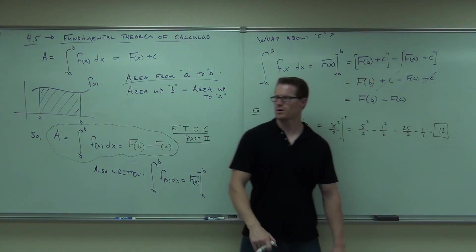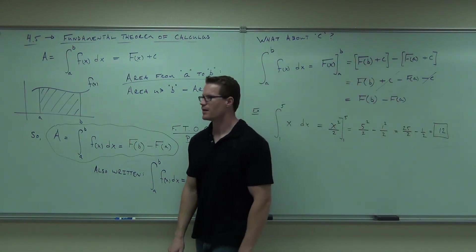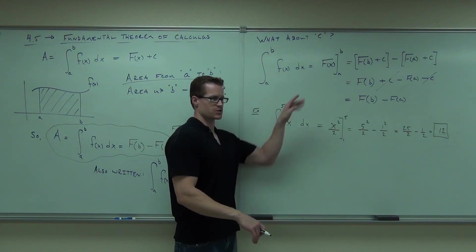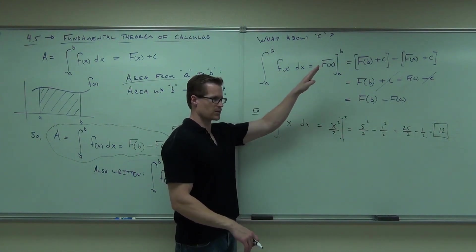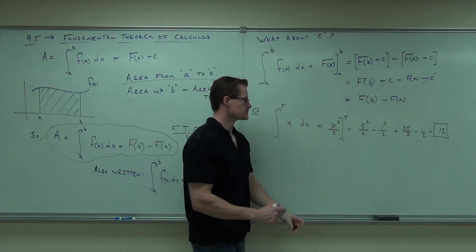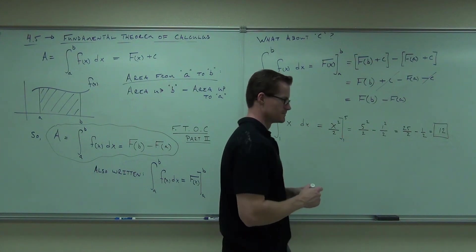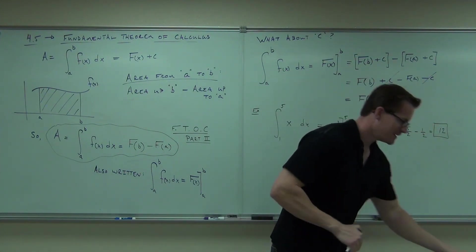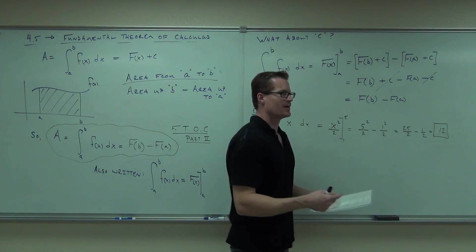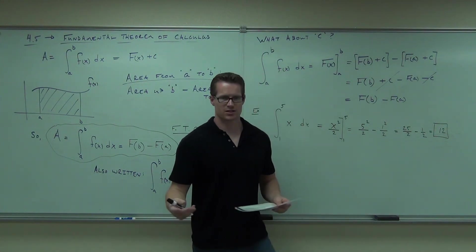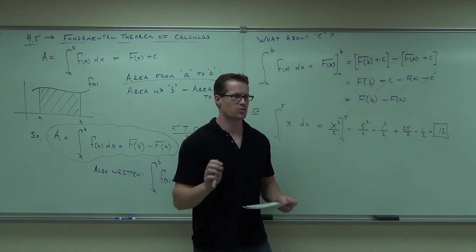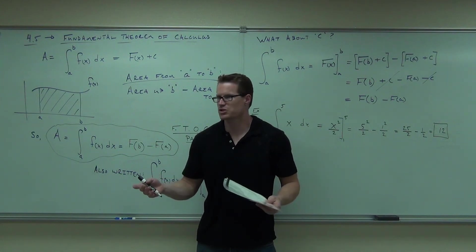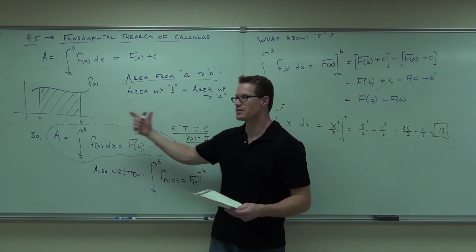What is 12? It's our area — the area under that curve, which is just a diagonal line, from 1 to 5. Is that quicker than a Riemann sum with all the left endpoint stuff? The other stuff is good to know — it shows you where it's coming from, why you're doing it, and makes sure you know what all this stuff means.